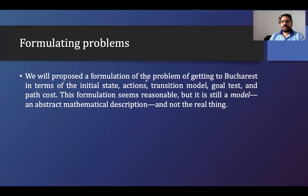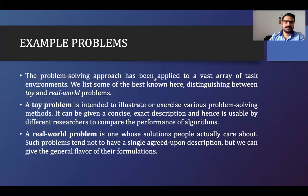In formulating the problem, we have seen all these things. We propose a formulation of the problem of getting to Bucharest in terms of initial state, action, transition model, goal state, and path cost. This formulation seems reasonable but is still a model — an abstract mathematical description and not the real thing. Now let's see how we can solve that particular problem.